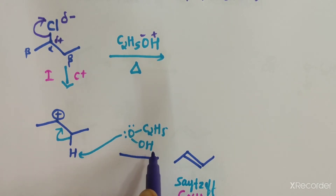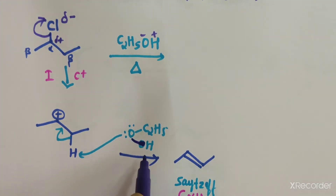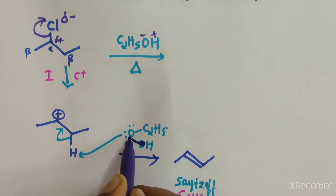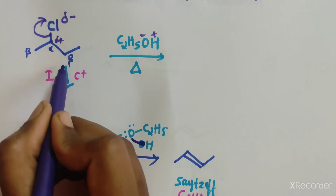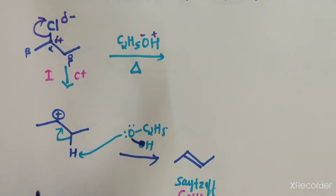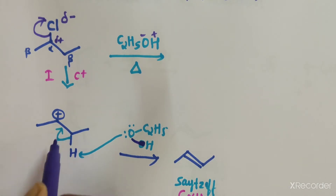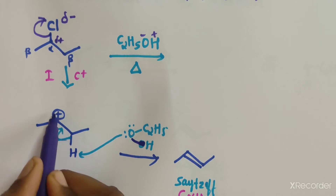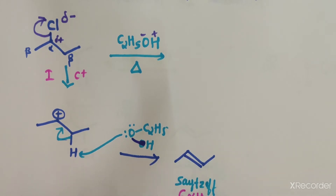In the second step, ethanol acts as the base. The oxygen of ethanol, with its lone pair of electrons, abstracts the beta hydrogen. The electrons shift towards the two carbon atoms, and the positive charge is neutralized. As a result, we get a double bond between these two carbon atoms.